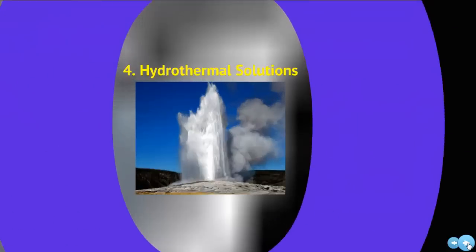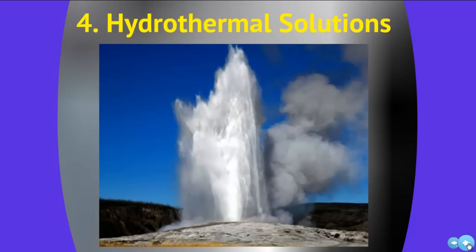The last way is through hydrothermal solutions. This is Old Faithful, a geyser at Yellowstone that goes off every 60 to 90 minutes — a hydrothermal feature. Very hot water deep underground carries lots of dissolved minerals. When they interact with the field rock, it can swap out minerals and change the parent rock, and it can also reach the surface and leave all kinds of features. That is the fourth and final way minerals can form: through magma, precipitation of water, heat and pressure, and hydrothermal solutions.